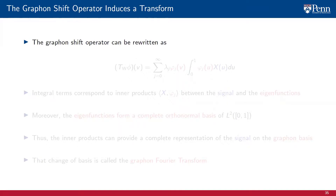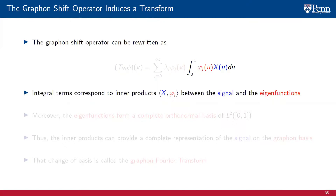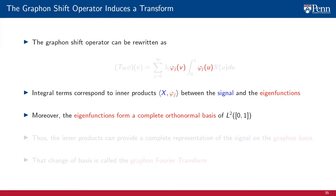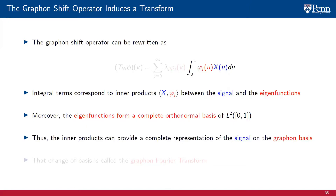The decomposition of the graphon on the operator's basis allows us to rewrite the graphon shift operator TW as a sum over the product between an eigenvalue lambda_j, the associated eigenfunction phi_j, and the integral of the product of that eigenfunction phi_j and the original graphon signal x. The integral terms in that expression correspond to inner products ⟨x, phi_j⟩ between the signal and a particular eigenfunction, which we can see as a projection of the original graphon signal x over that particular eigenfunction. Since the eigenfunctions of a graphon shift operator form a complete orthonormal basis of L2, those inner products provide a complete representation of the original graphon signal x. This change of basis without loss of information is what we call the graphon Fourier transform, similar to how a graph Fourier transform decomposes a graph signal into the eigenfrequencies of the graph shift operator.